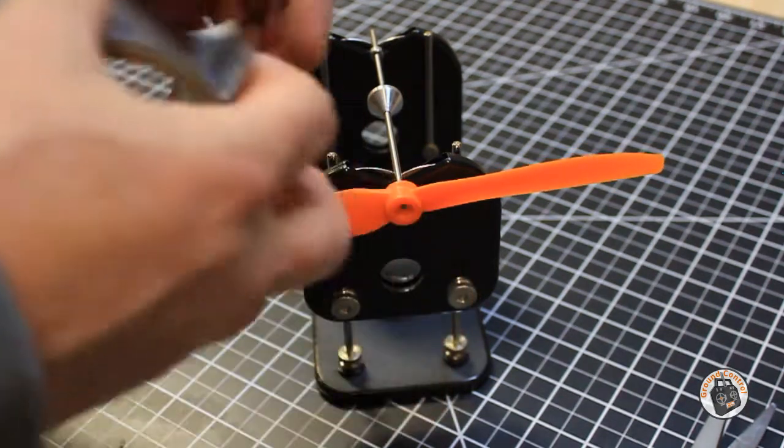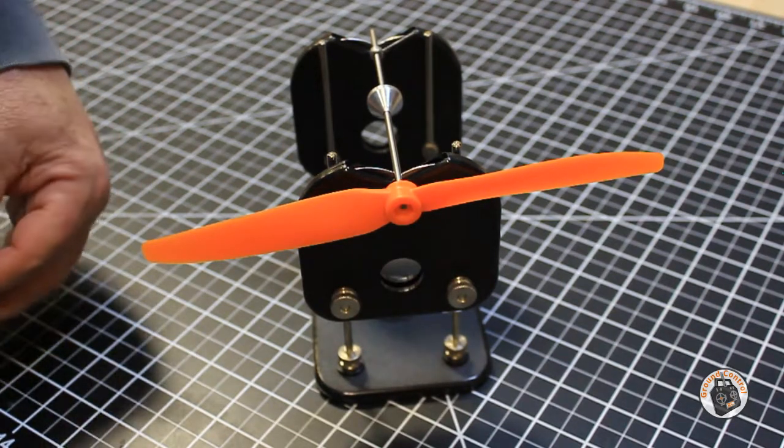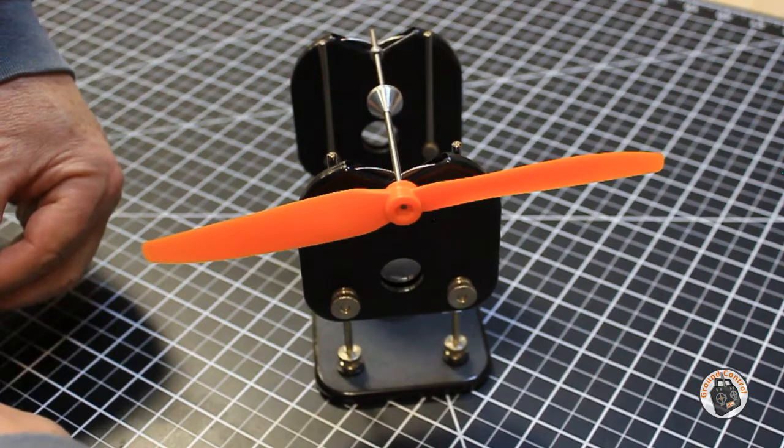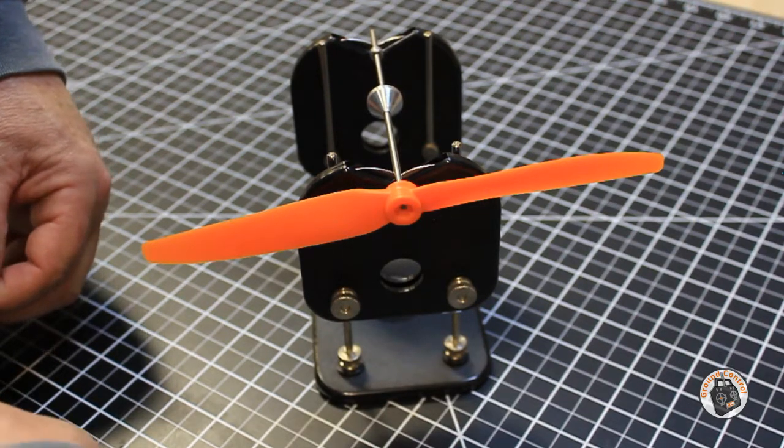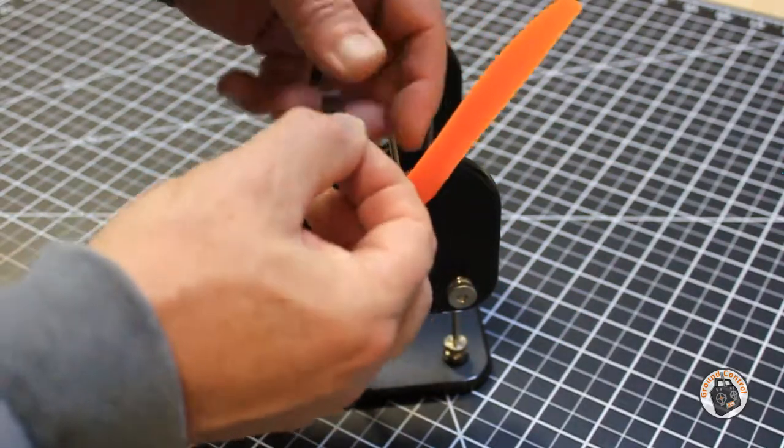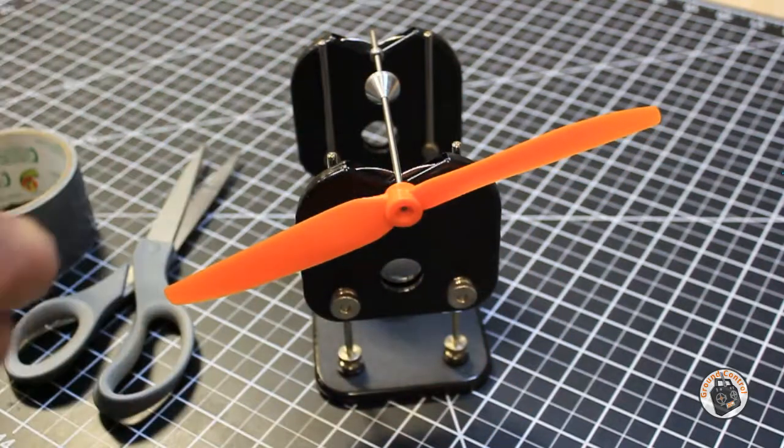So what I'm going to do is I'm going to cut off a piece right now that will fit into that area between those two blades. Okay so let's see. I think that'll fit in there.